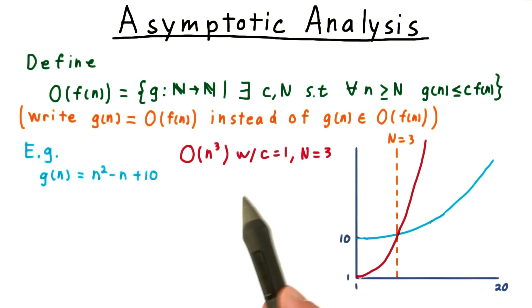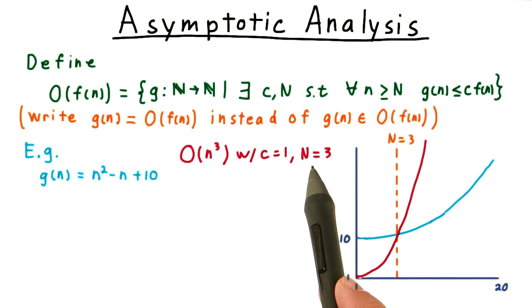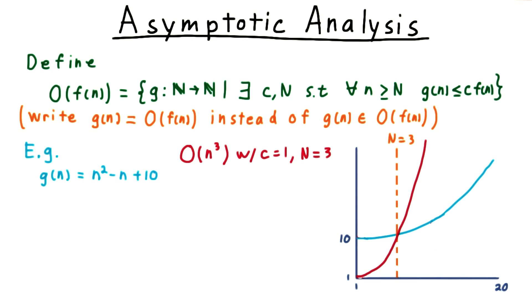Note that the big O notation does not have to create a tight bound. Thus, g(n) is also order n². Setting c = 1 and N = 3 works for this.